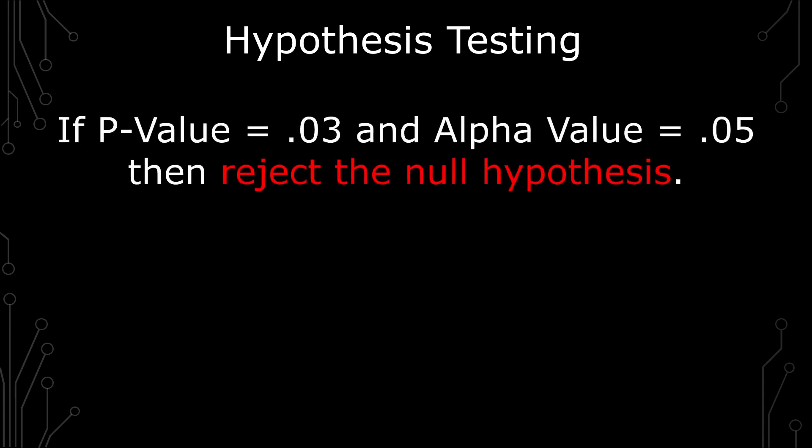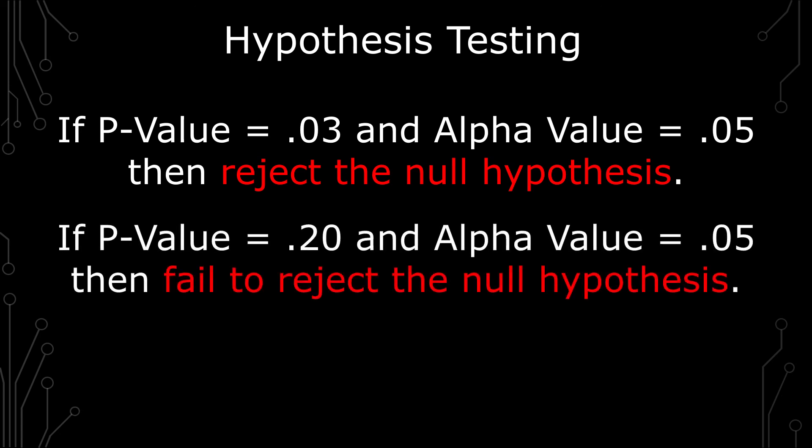If your p-value is 0.03, that's less than 0.05, and so you would reject the null hypothesis. If your p-value is 0.2 and your alpha value is 0.05, then you fail to reject the null hypothesis. And so that's the relationship in regards to the p-value and the hypothesis test.